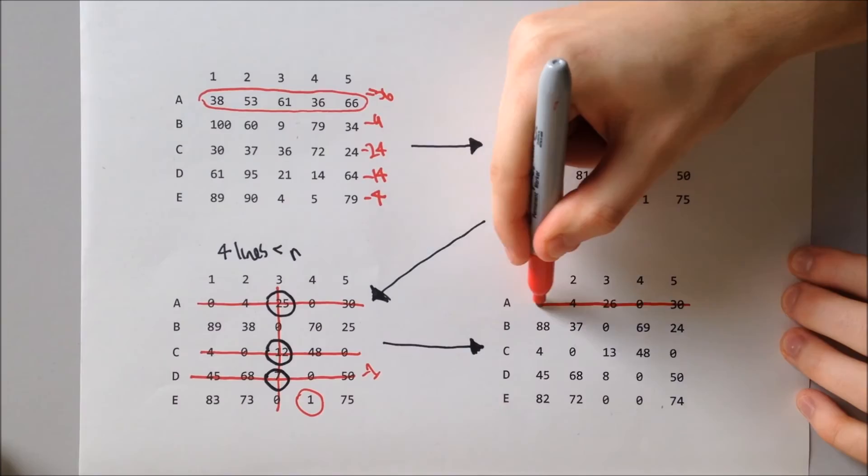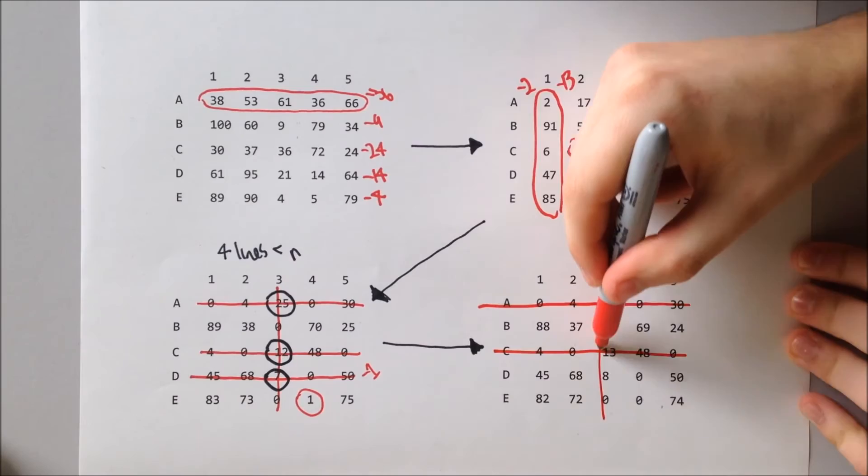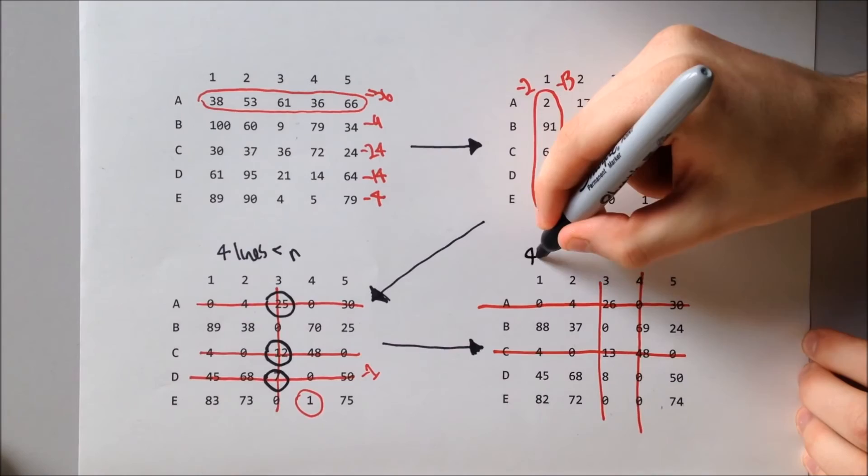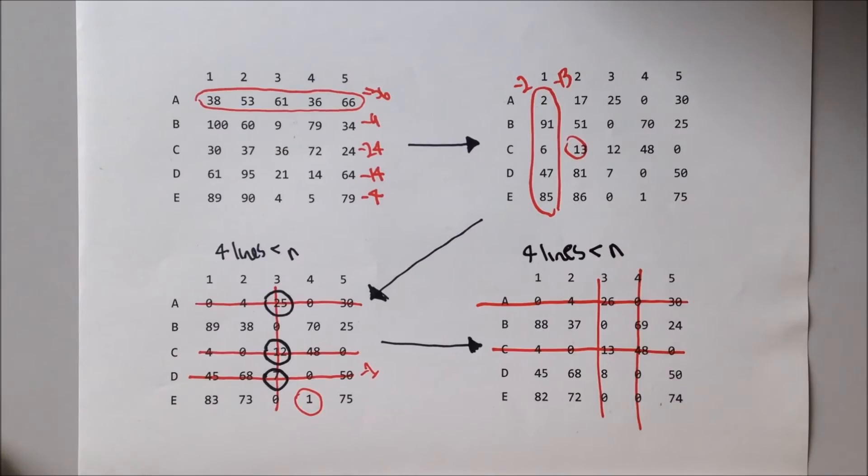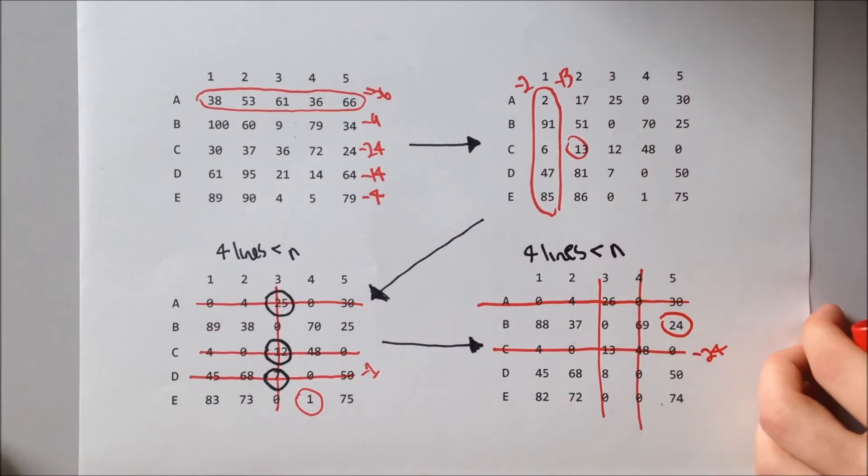We now need to cross out the zeros again with the minimum number of horizontal and vertical lines. As the number of lines is not sufficient again, we need to reduce the matrix again, minusing 24, as that is our lowest element, from all the numbers that are uncrossed, and adding 24 to all the elements that are double-crossed.